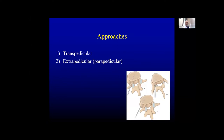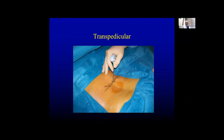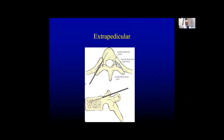There are two approaches for kyphoplasty: transpedicular, usually in the lumbar region, and extrapedicular or parapedicular, selected for thoracic fractures. The pedicles of the mid-thoracic spine are slender and usually oriented more toward the sagittal plane than lumbar. Transpedicular often does not allow sufficient access to the middle to anterior third of the vertebral body, and the low angulation does not allow central balloon placement.